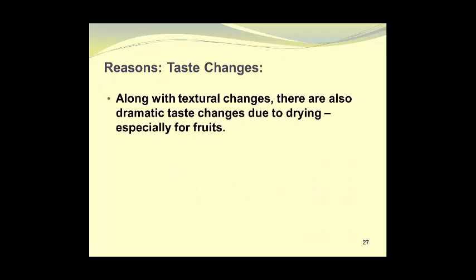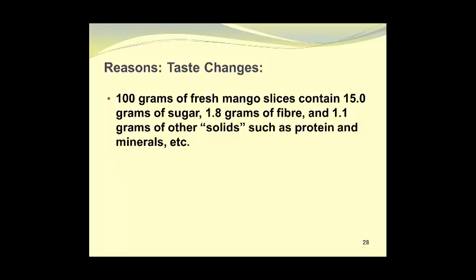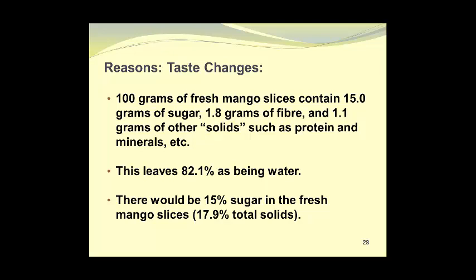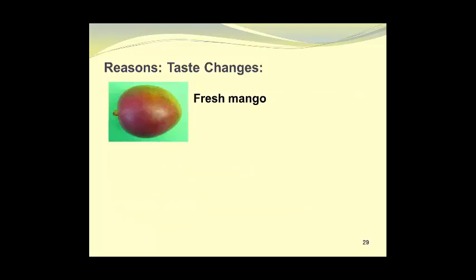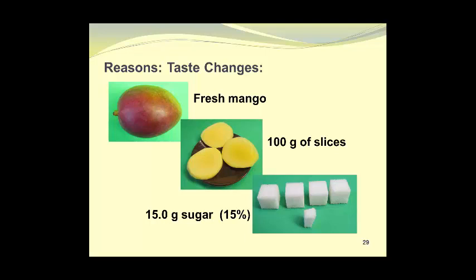Along with textural changes, there are also dramatic taste changes due to drying, especially for fruits. Most pronounced among these taste changes is sweetness. If we take 100 grams of fresh mango slices, they will contain 15 grams of sugar, 1.8 grams of fiber, and 1.1 grams of other solids such as protein and minerals, etc. This leaves 82.1% as being water. There would be 15% sugar in the fresh mango slices, and a total of 17.9% solids. So here's the fresh mango — we take some mango slices weighing 100 grams, and what we are looking at then is 15 grams of sugar, which are represented by these 4.5 sugar cubes.